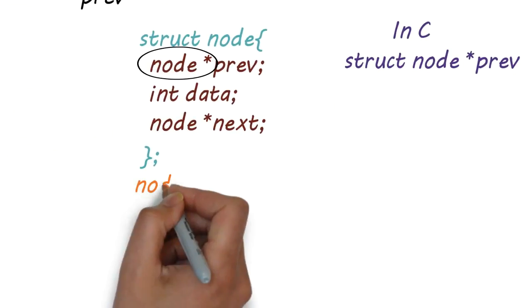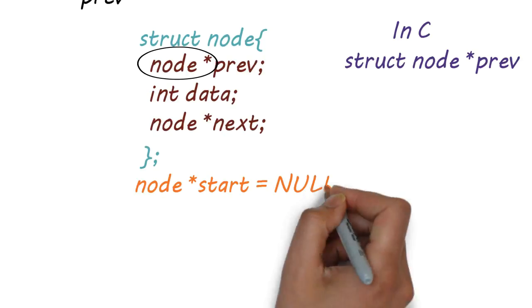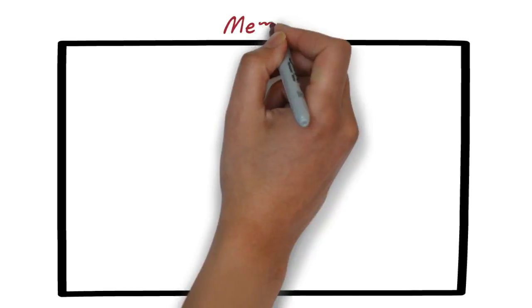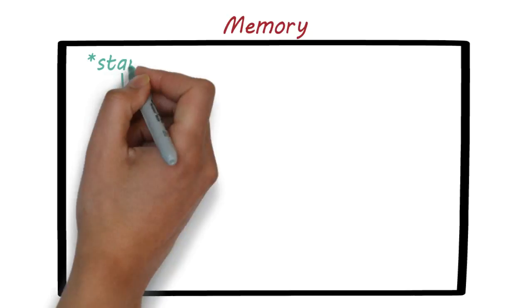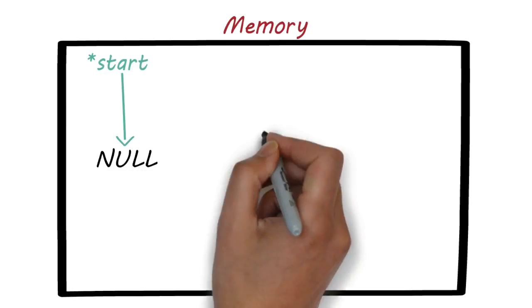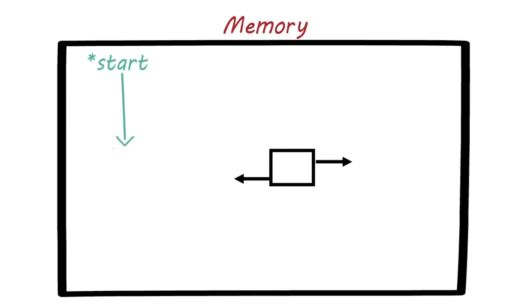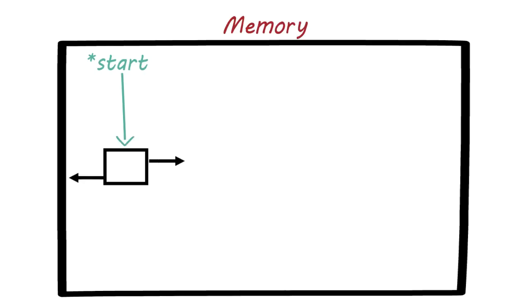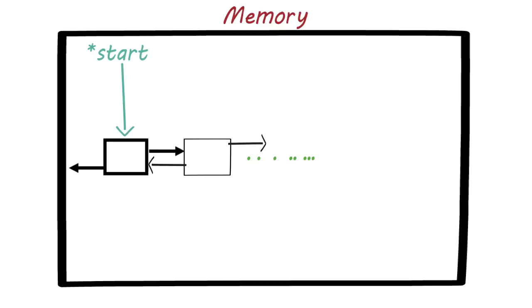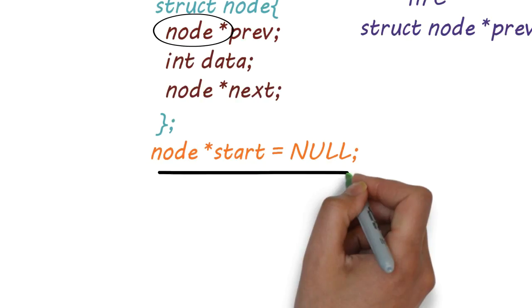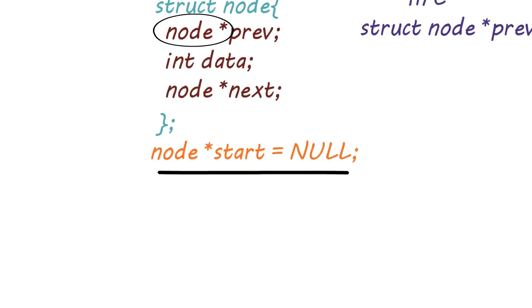Now we need a start pointer. Why do we need a start pointer and why is it currently pointing to null? We need to understand how the list is created inside memory. First the start pointer is created and it points to null. When the first node is created, the node is attached with the start pointer, and then the list goes on increasing. Without the start pointer, we can't access the list, so the start pointer is important.